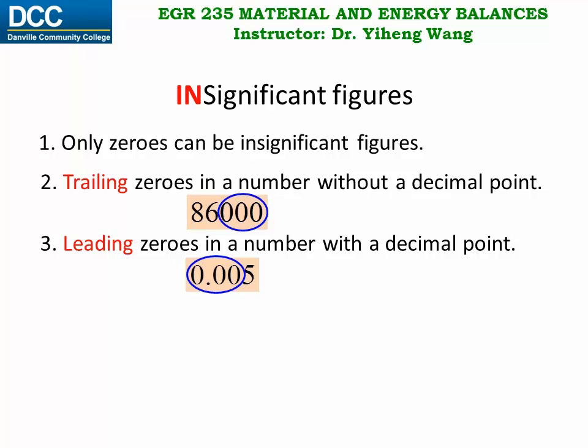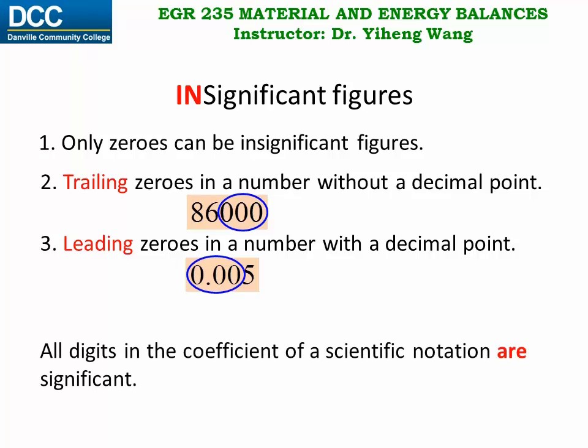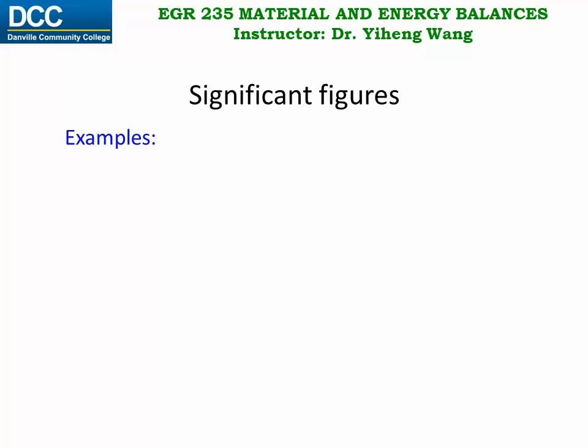As a separate rule, if a number is given in scientific notation, then all digits in the coefficient are significant, which I will talk about a little bit more later. Let's look at some examples. For this number, 30,200, as you can see it does not have a decimal point. These two 0s are trailing 0s, therefore they are insignificant. This 0 is not, therefore it is significant, so this number overall has three significant figures.